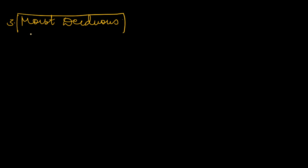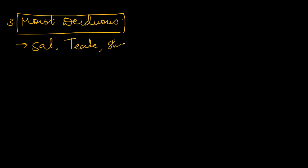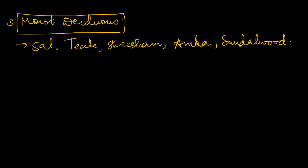Now let's move to moist deciduous forests. In moist deciduous forests, the common trees you can find are sal, teak, sesam, amla, and sandalwood, etc.